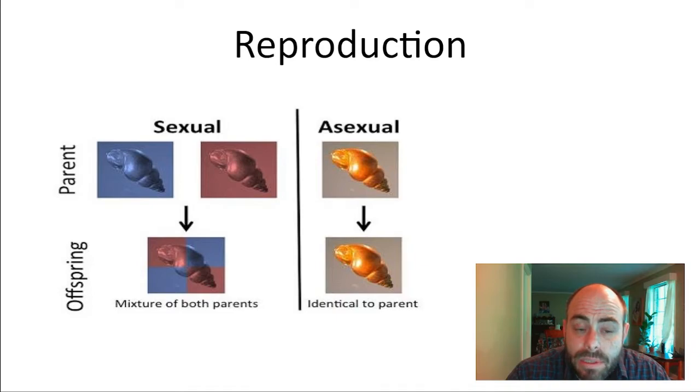It is always the case that asexual reproduction is one parent, and the idea here is that that individual clones itself. So it's the one parent idea works okay, but just make sure that you understand that in asexual reproduction the offspring is genetically identical to the parent.